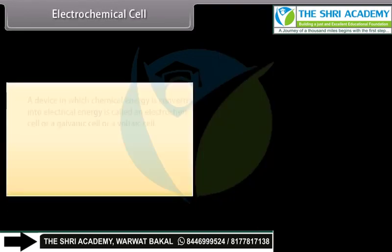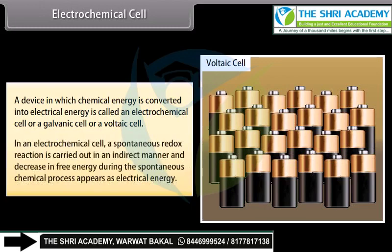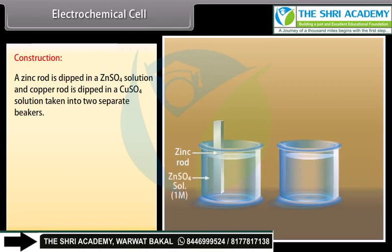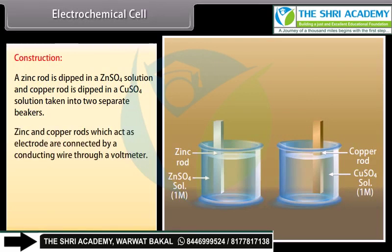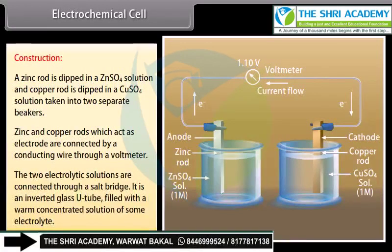Electrochemical Cell: A device in which chemical energy is converted into electrical energy is called an electrochemical cell, or a galvanic cell, or a voltaic cell. In an electrochemical cell, a spontaneous redox reaction is carried out in an indirect manner, and the decrease in free energy during the spontaneous chemical process appears as electrical energy. Construction: A zinc rod is dipped in a ZnSO₄ solution, and a copper rod is dipped in a CuSO₄ solution, taken into two separate beakers. Zinc and copper rods, which act as electrodes, are connected by a conducting wire through a voltmeter. The two electrolyte solutions are connected through a salt bridge — an inverted glass U-tube filled with a warm concentrated solution of some electrolyte.